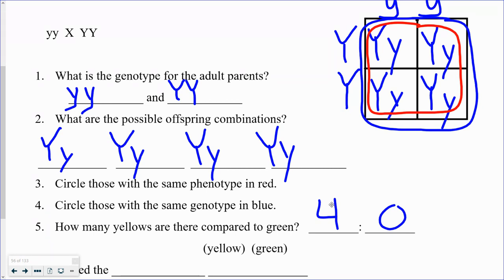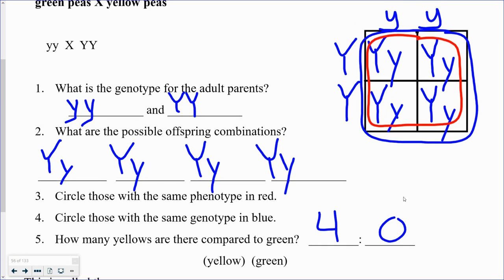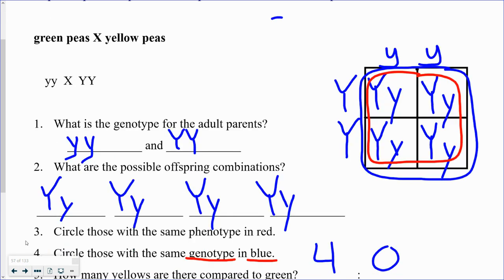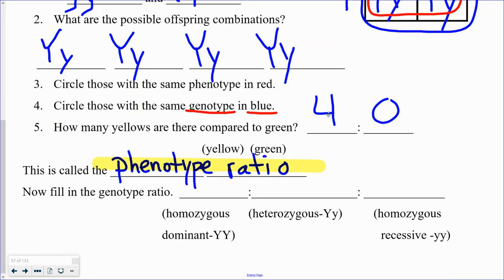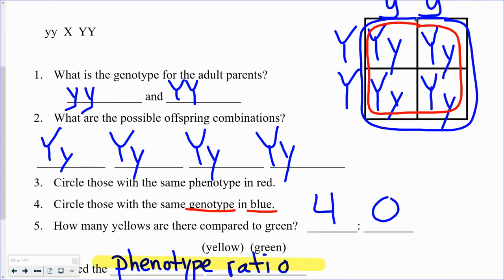We end up with four yellows to zero green seeds. If you had peas in your backyard and planted yellow peas crossed with green peas, if they're both true breeding, all of them are going to come out yellow. When comparing outside appearance, we call that the phenotype ratio. Now when we look at the genotype ratio, we're comparing the three genotypes: homozygous dominant to heterozygous to homozygous recessive. How many of these are homozygous dominant?